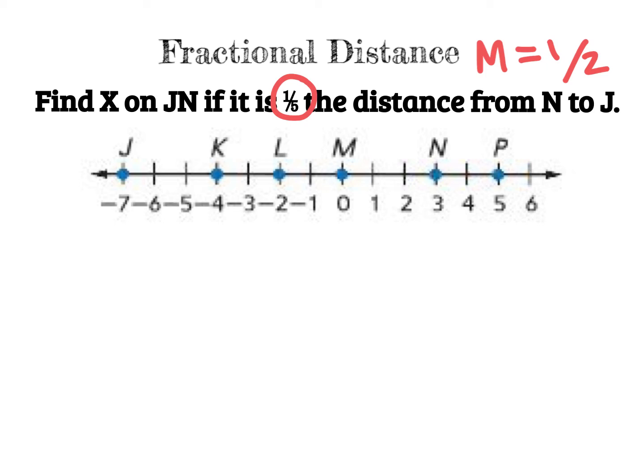So we want to find X on segment JN if it is a fifth the distance from N to J. So I'm first going to figure out what segment I'm talking about. I'm talking about J to N from here to here. In that segment, I want to find where X is located if it is a fifth of the distance from there. A fifth the distance. So first I need to find the distance. The distance from J to N, you can count them, right? Count the points over if you like. It's going to be 10 units. 10 is the full distance. I don't want the full distance. I want a fifth of the distance. If I want a fifth of the distance, I'm going to multiply the distance times the fraction I'm interested in. A fifth of 10. And that gives me two units.